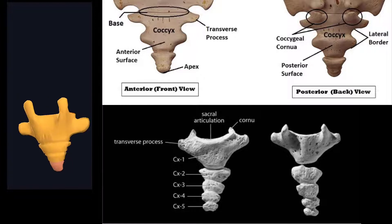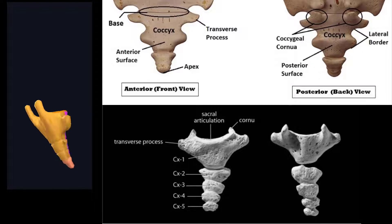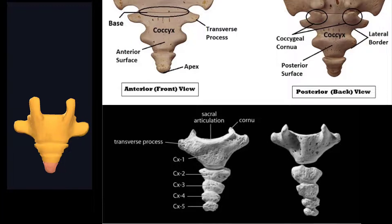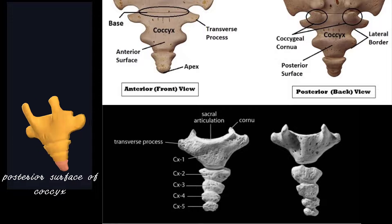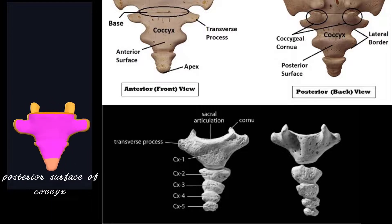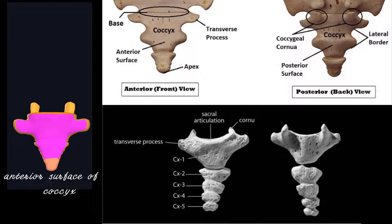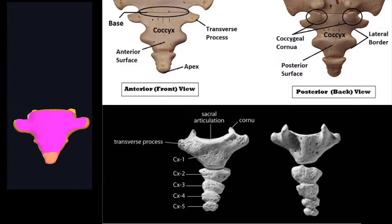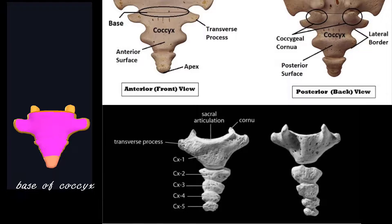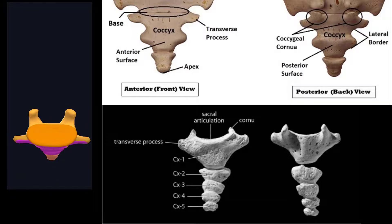Now we study the surfaces of the coccyx, again using color-coding. The yellow color is the posterior surface, the pink color is the anterior surface, the light orange color is the apex of the coccyx, and the upper orange part is the base of the coccyx.